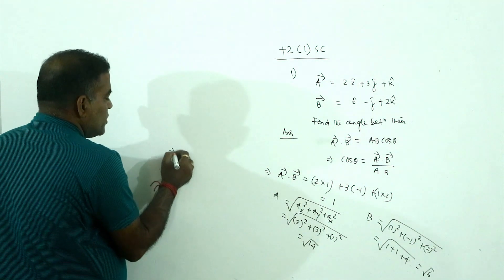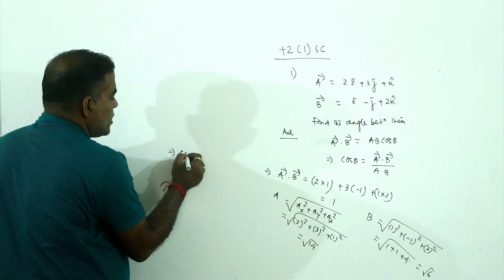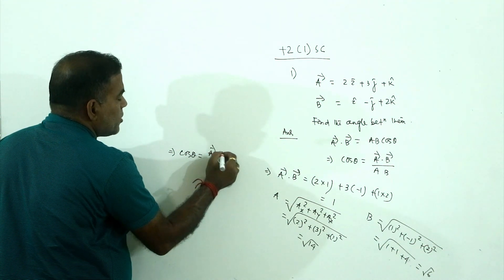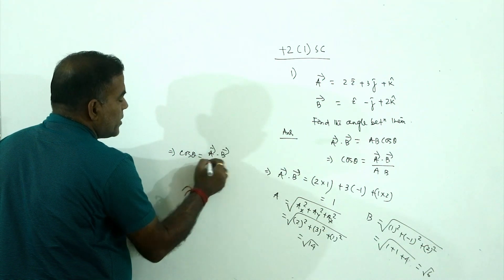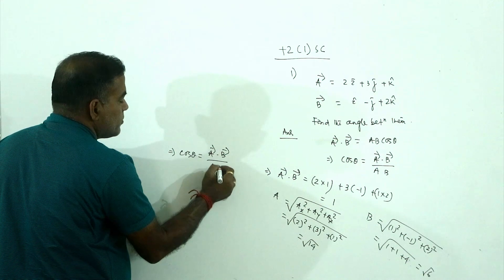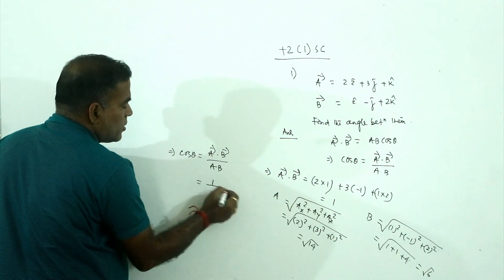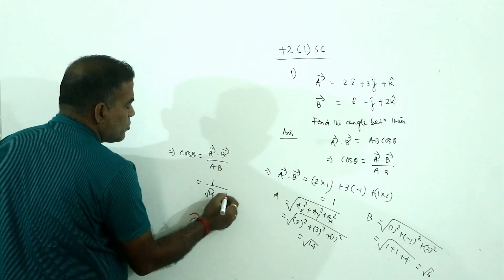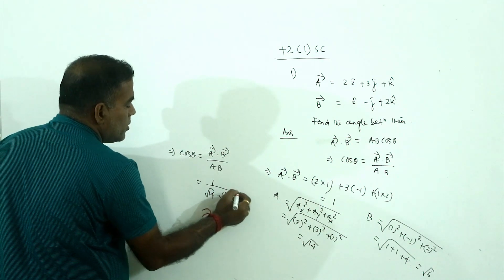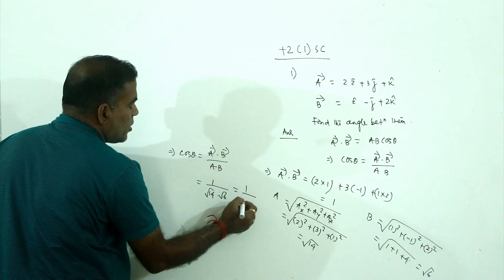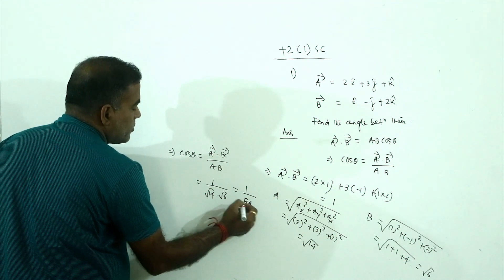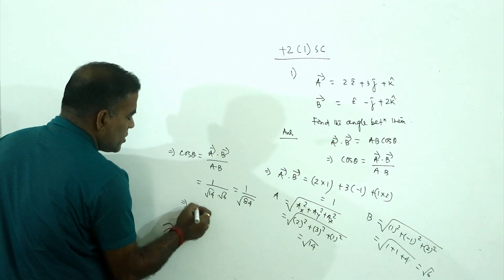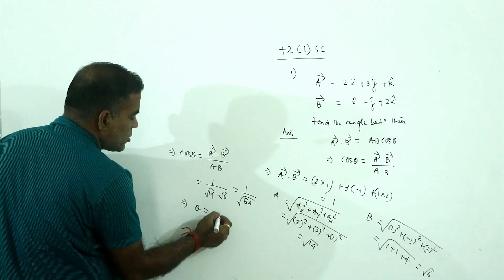Then cos θ equals a·b divided by |a||b|, that is 1 divided by (root 14 × root 6), which is 1 by root 84. So θ equals cos inverse of 1 over root 84.